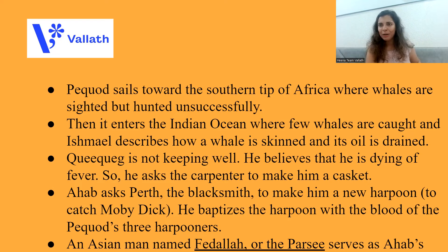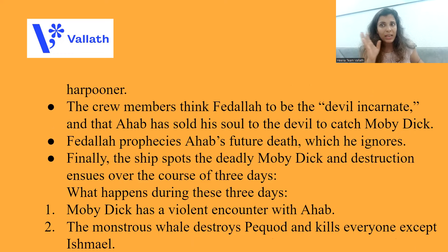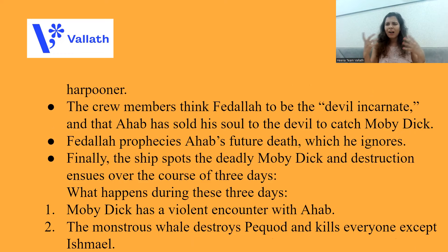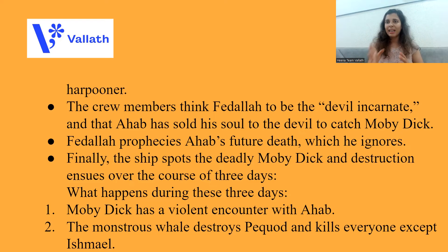There is an Asian man who has been sneaked inside — no one knew he was there in Pequod until now, when he suddenly appears. The name of this Asian man is Fedallah, also called Parsi. He is Ahab's harpooner, but he is also a prophet. When the crew members meet Fedallah, they find him a very dark character. They call Fedallah the devil incarnate and think that Ahab has become mad — that he has sold his soul to this devil in order to catch Moby Dick. Fedallah then prophesies Ahab's future death, but Ahab misinterprets the prophecy and becomes sure that he will not be killed at sea. He is mistaken.